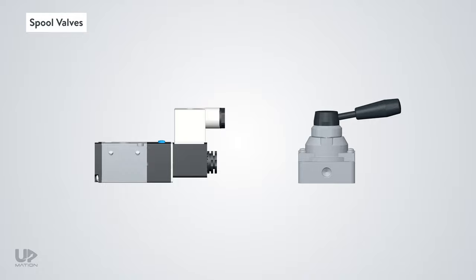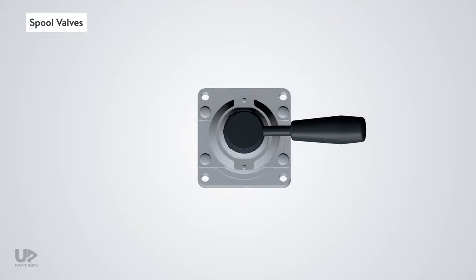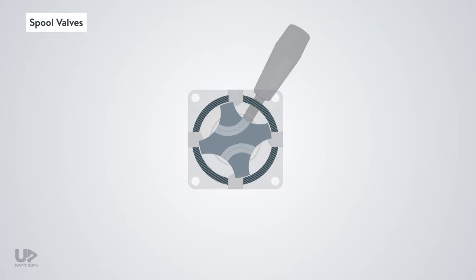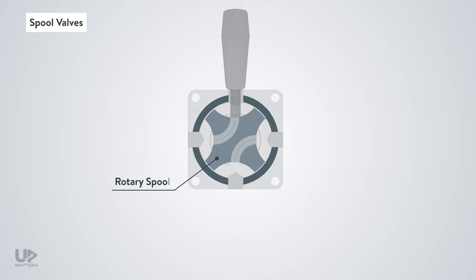But in the other type, if we look at that from the top side, the spool movement is rotational. Thus, it is called a rotary spool valve. This rotary spool will direct the fluid into different passages as well.